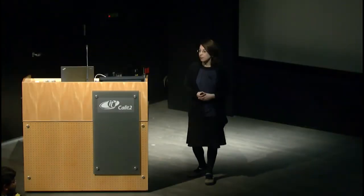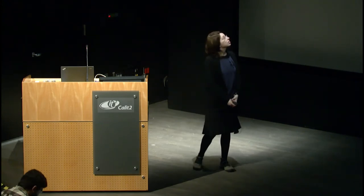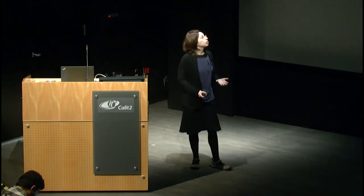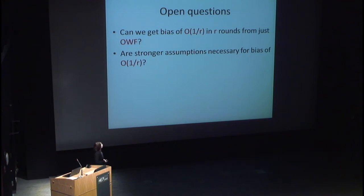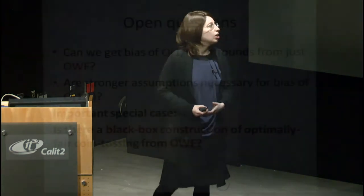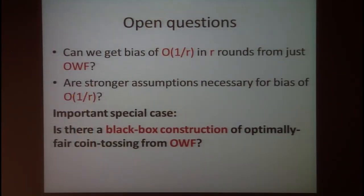This raises natural open questions: can we achieve optimal bias of one over r in r rounds assuming only one-way functions? Or are stronger assumptions actually necessary? In this work we consider an important special case: whether there is a black box construction of optimally fair coin tossing from one-way functions.